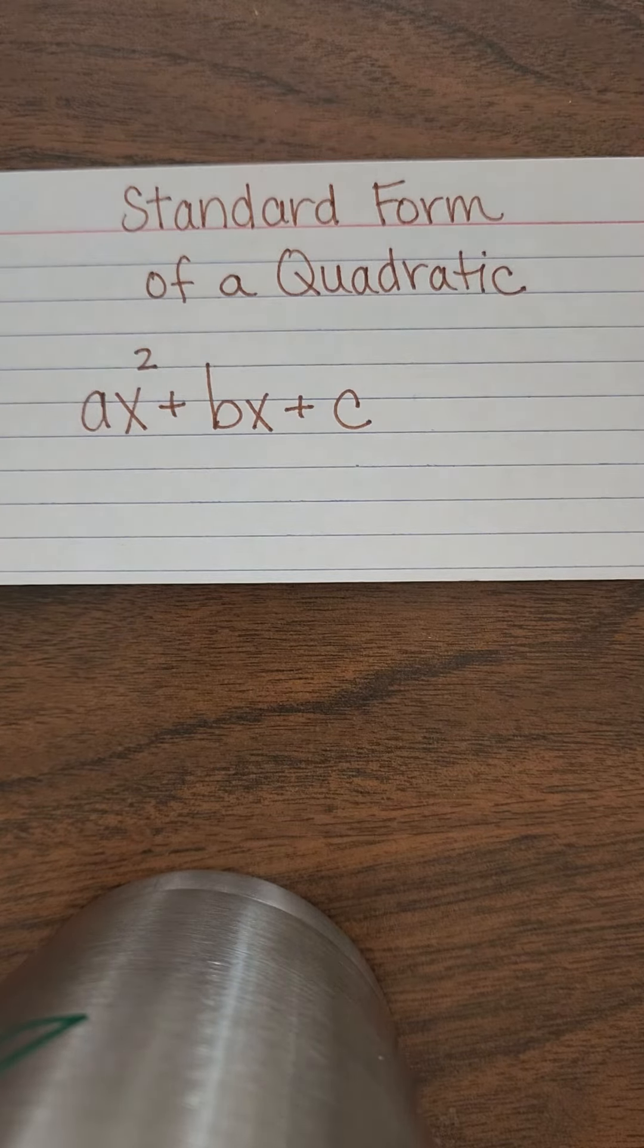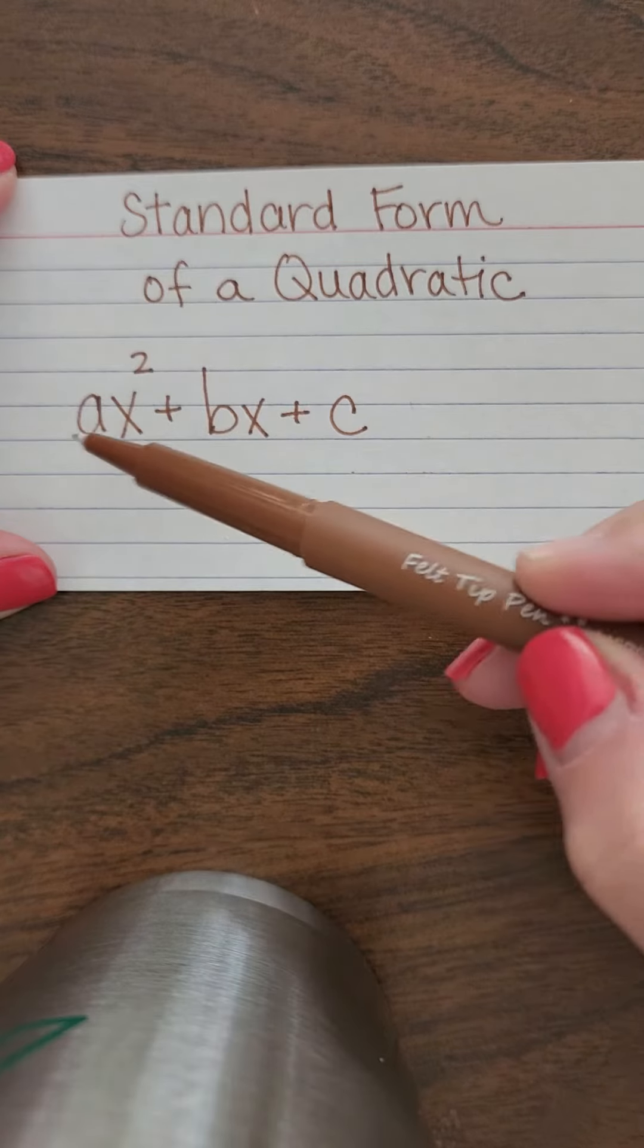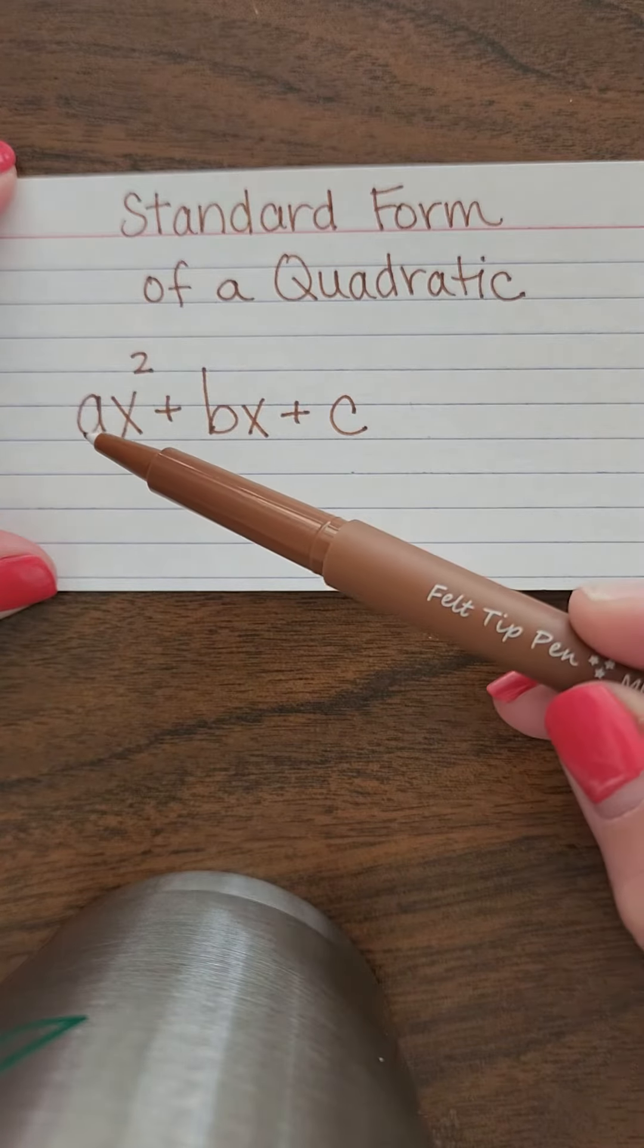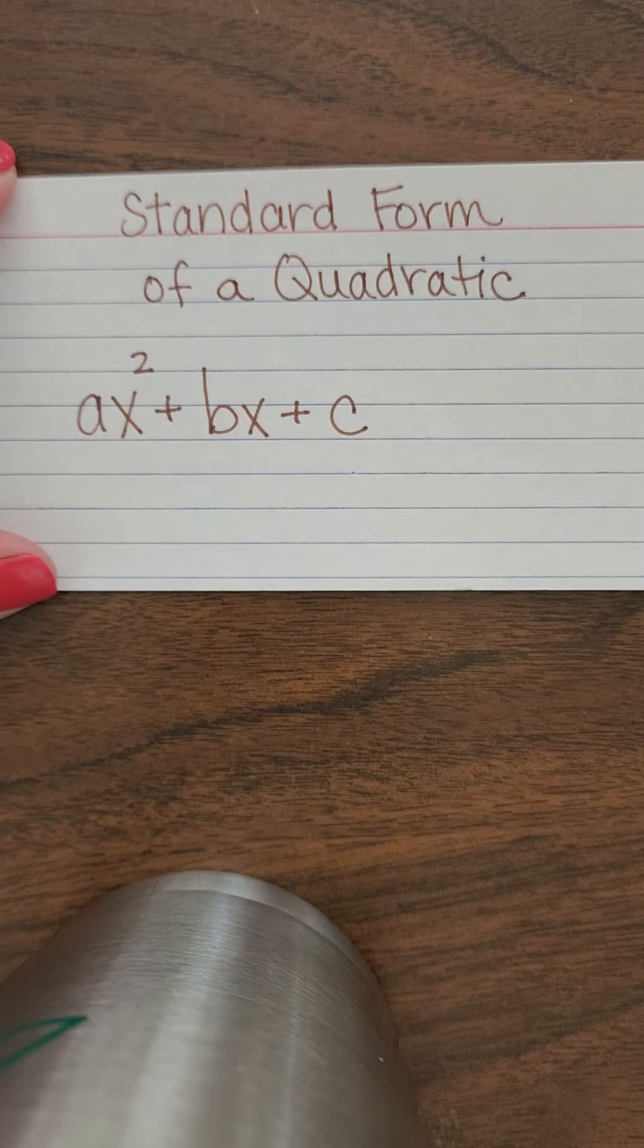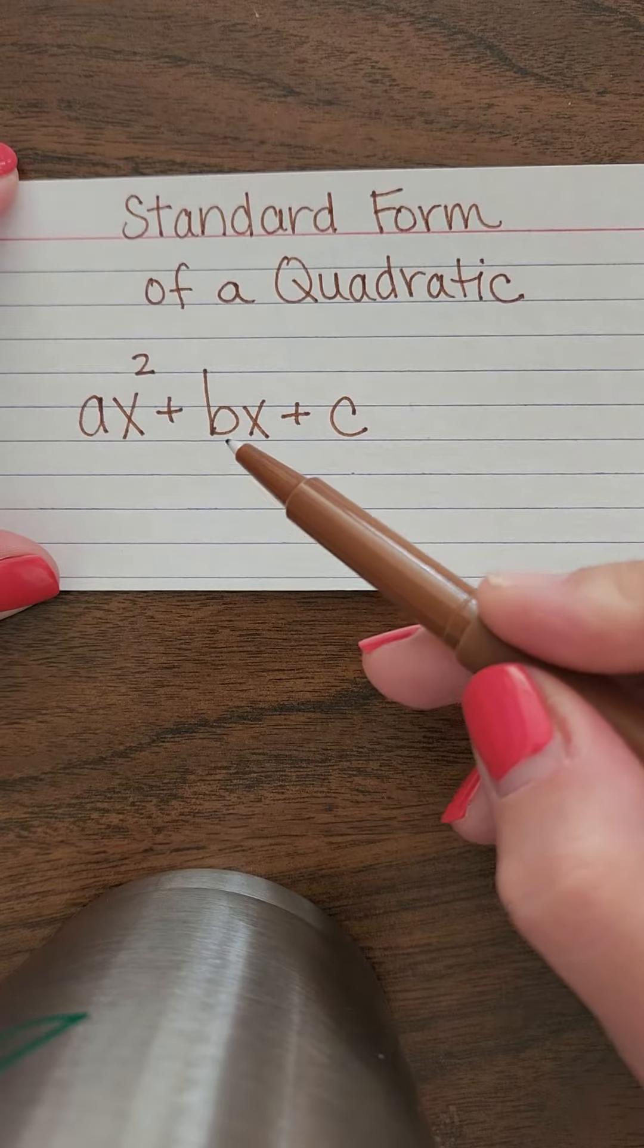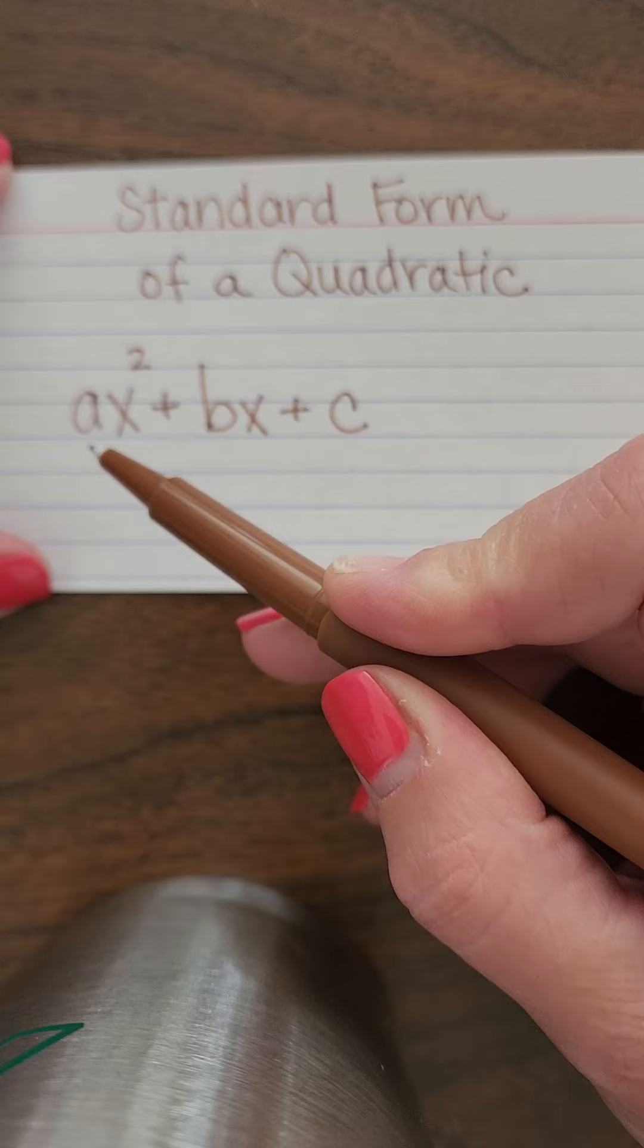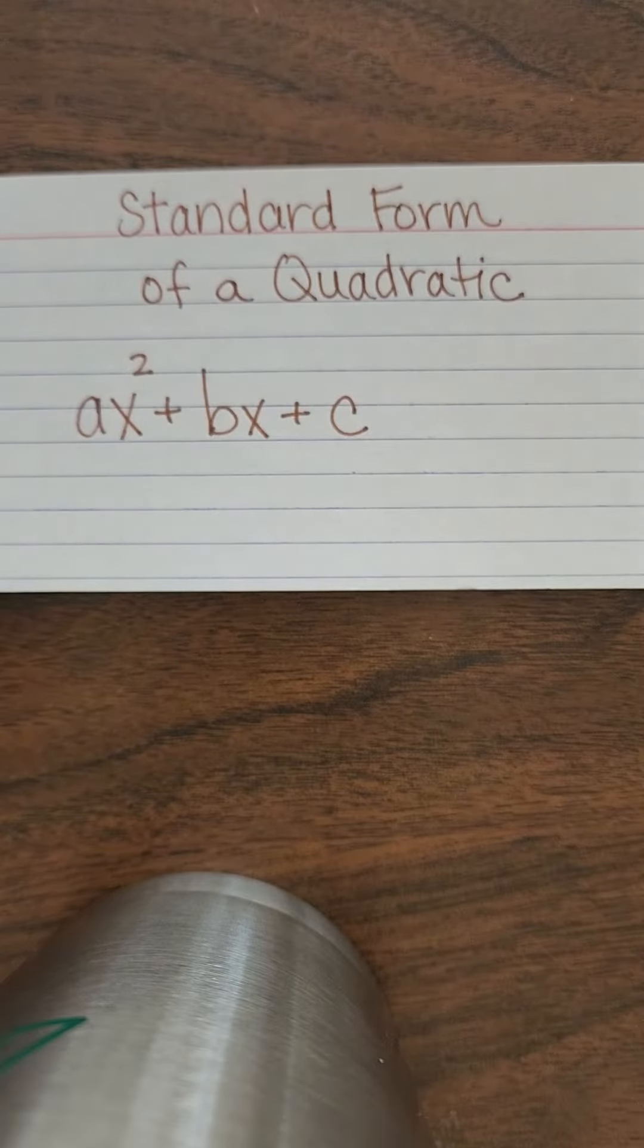All right, first thing we're going to talk about is the standard form of a quadratic. So the standard form is the squared term, the single term, and the constant. Remember you have A, B, C - you have your three terms like this. This is very important for when you're using the axis of symmetry formula. You need to know which one is your B and which one is your A. So make sure you have standard form of a quadratic on a card.